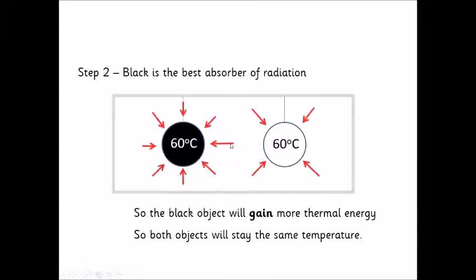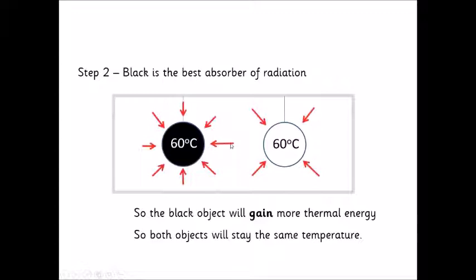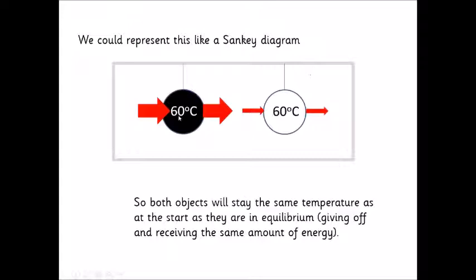But we need to think a little further, because black is also the best colour at absorbing radiation. So after the radiation is reflected around inside the box, sooner or later it's going to hit one of these two balls, but if it hits the black ball it's much more likely to be absorbed. So we don't find that the black ball gets cooler and cooler, and the white one gets hotter and hotter, because the black one is both emitting and absorbing the most radiation. Simplified like a Sankey diagram, the amount the black ball absorbs and emits are the same width — it's in thermal equilibrium, staying at the same temperature. The white ball is absorbing less radiation but also emitting less, so it is also in thermal equilibrium.